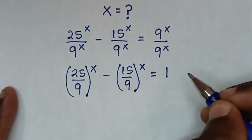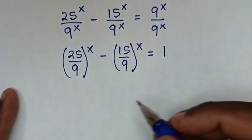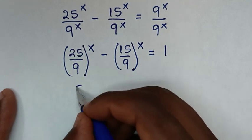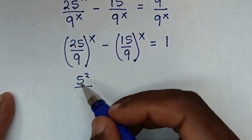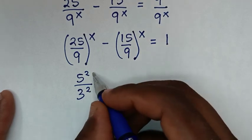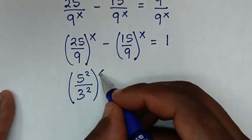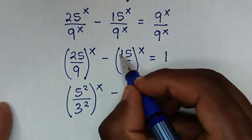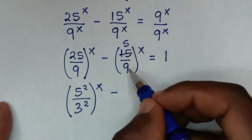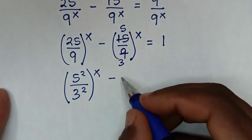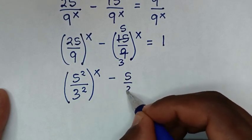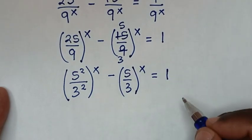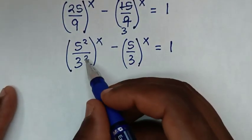Simplifying: 25 is 5 squared and 9 is 3 squared, so (25/9)^x becomes (5²/3²)^x. Then 15/9 simplifies — 15 divided by 3 is 5, and 9 divided by 3 is 3 — giving (5/3)^x. The right side equals 1.